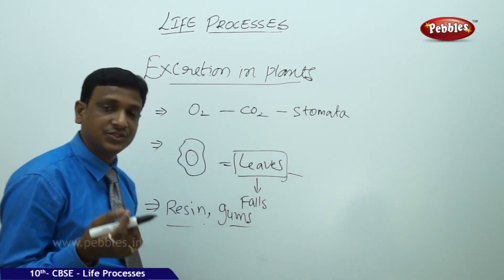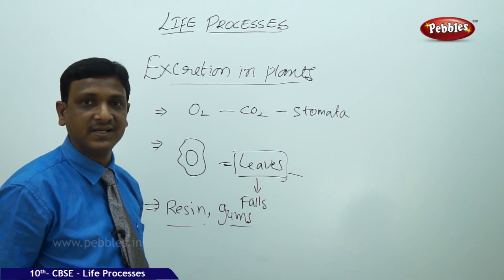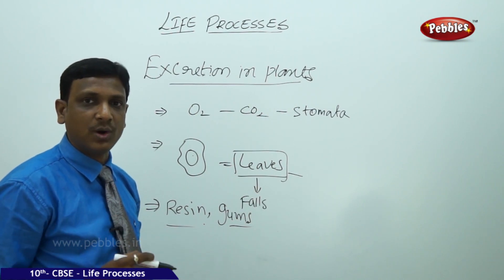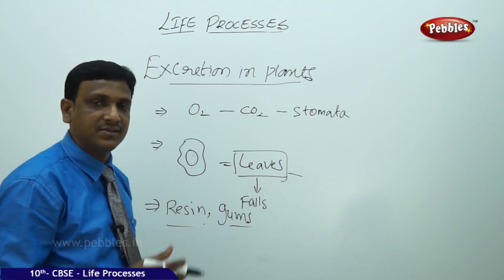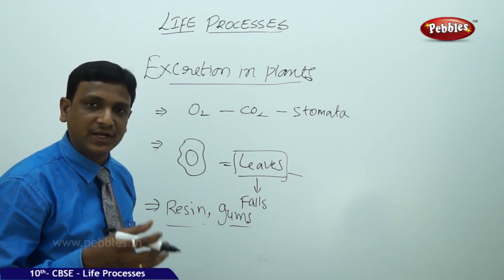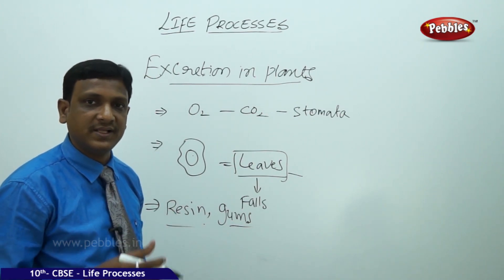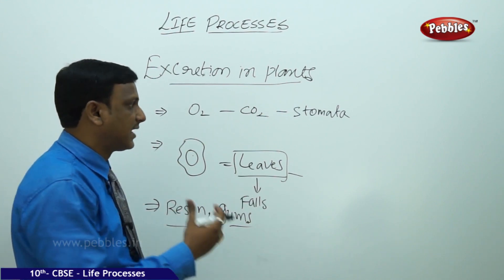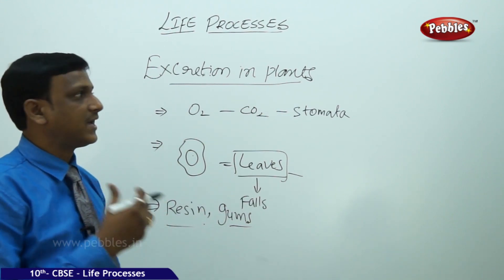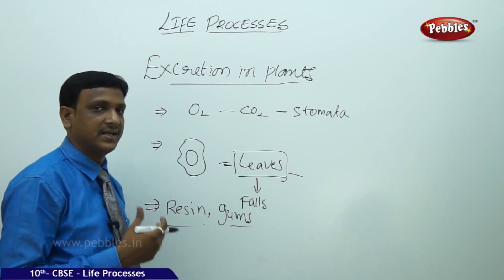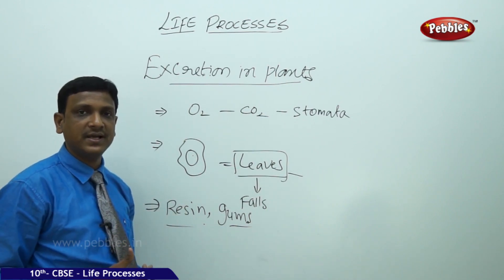Certain plants store their waste materials in the form of crystals called raphytes. It has also been found recently that some plants excrete waste materials from their roots into the soil. In this way, plants have various mechanisms of getting rid of waste materials, but they don't have a system like kidneys and an excretory system as seen in animals.